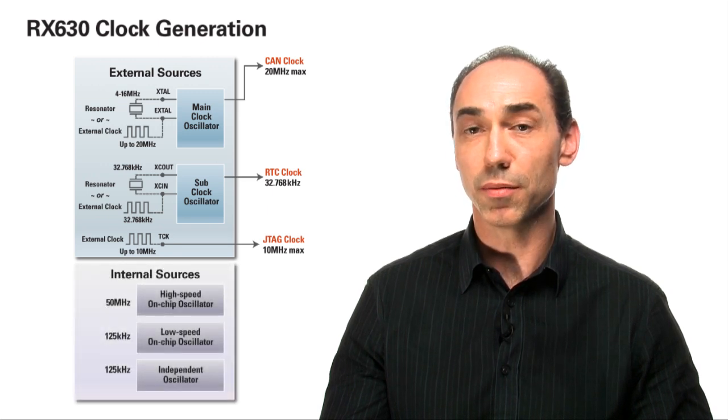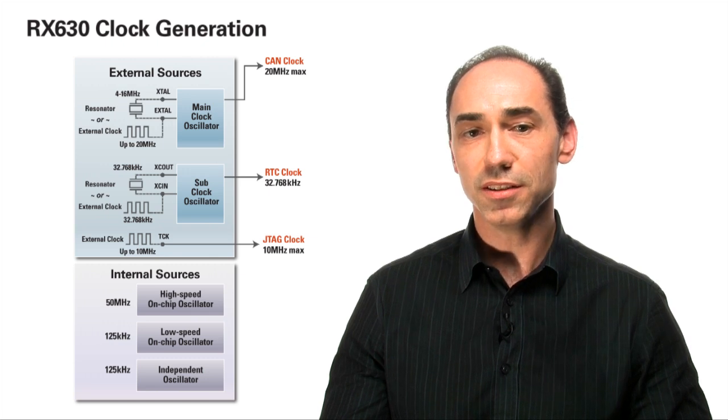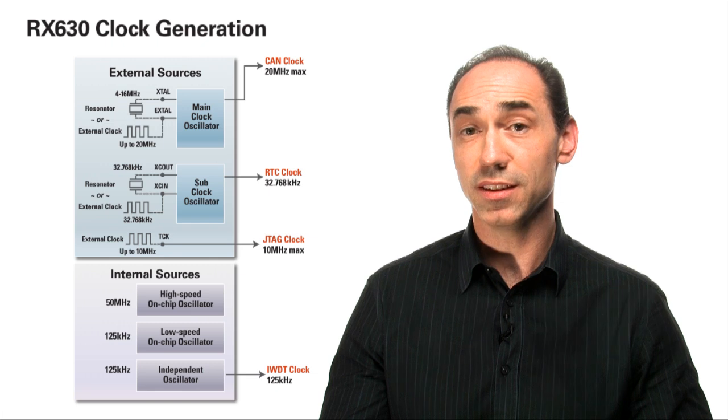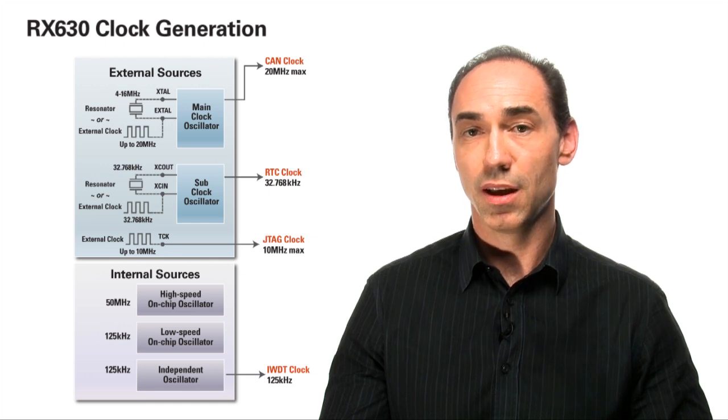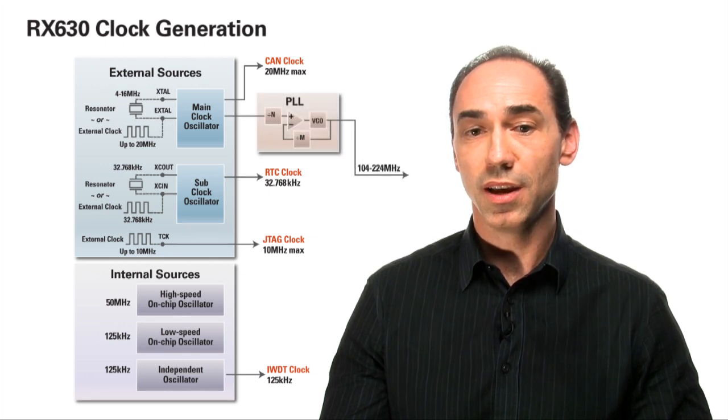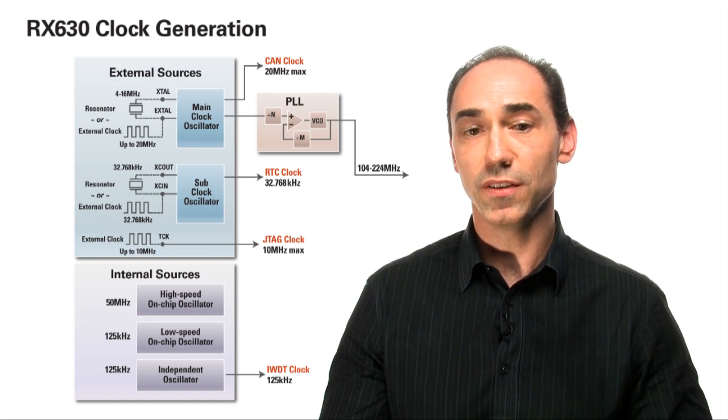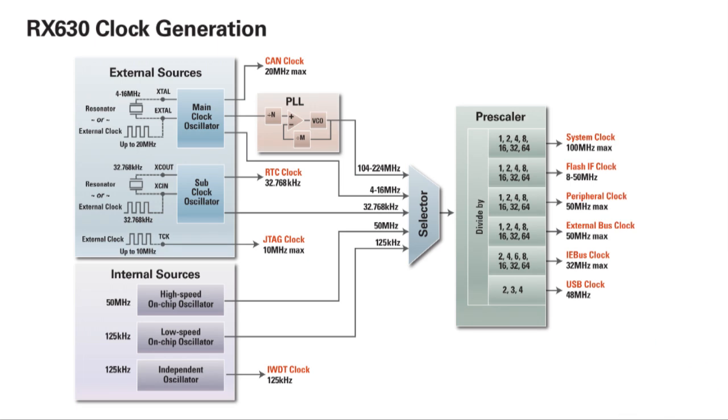RX has the ability to monitor the main clock oscillator, and in case of failure, will automatically switch to using the on-chip oscillator, which adds safety protection. The phase lock loop, or PLL, has a frequency of 104 to 224 MHz. Users can configure each clock using a selector and a prescaler. It is also possible to turn off clocks which are not needed, in order to save power and reduce noise.